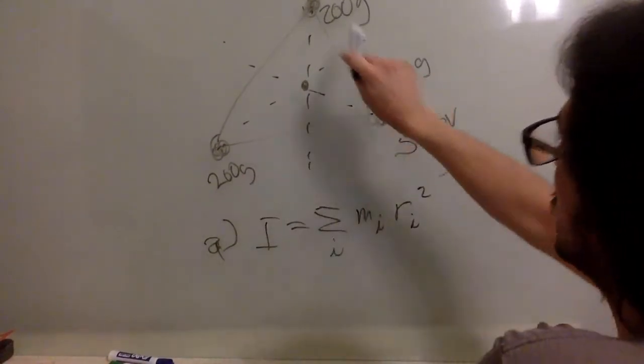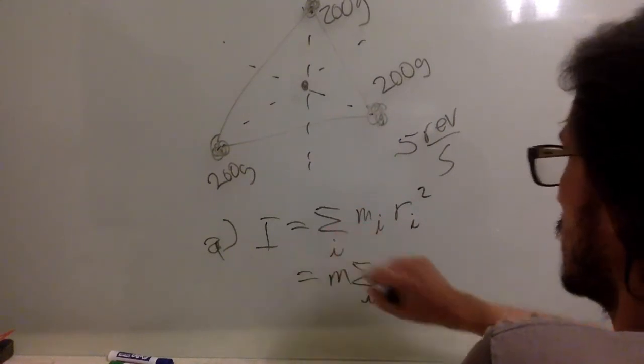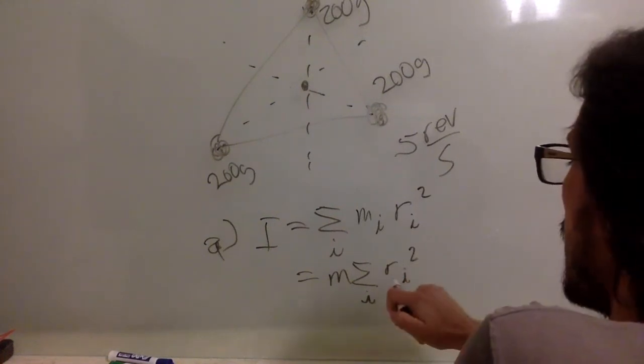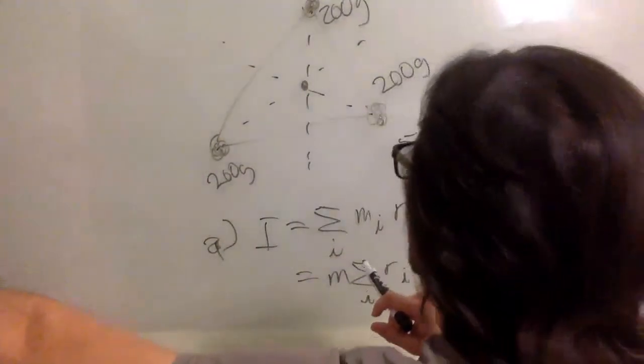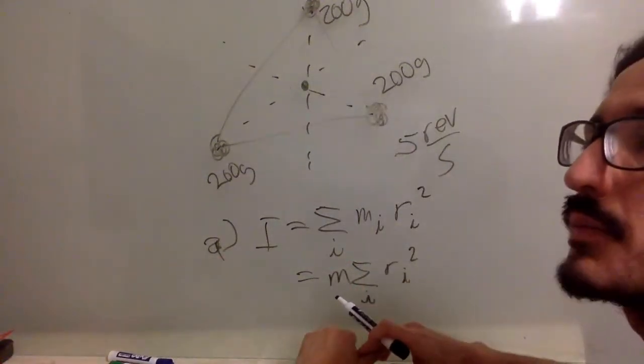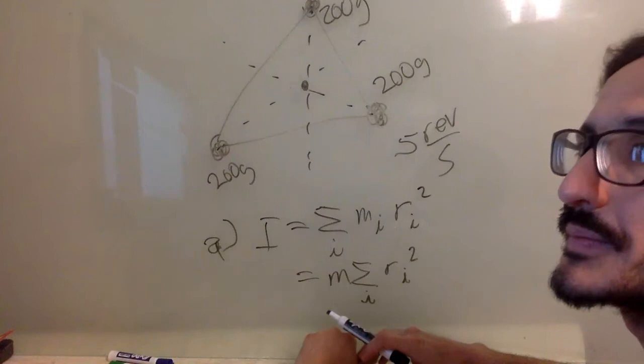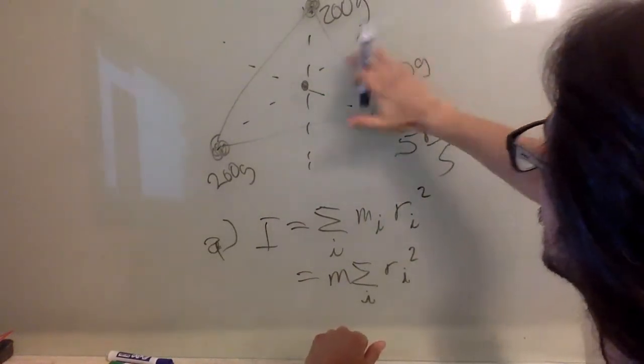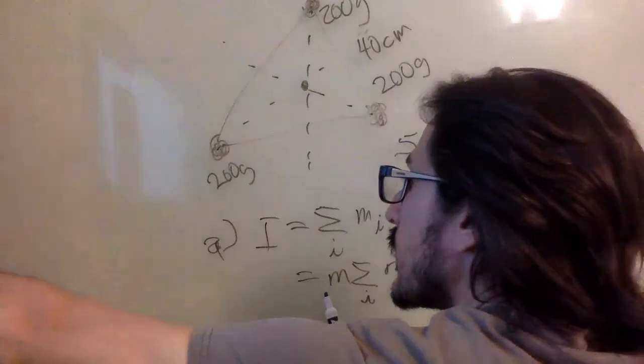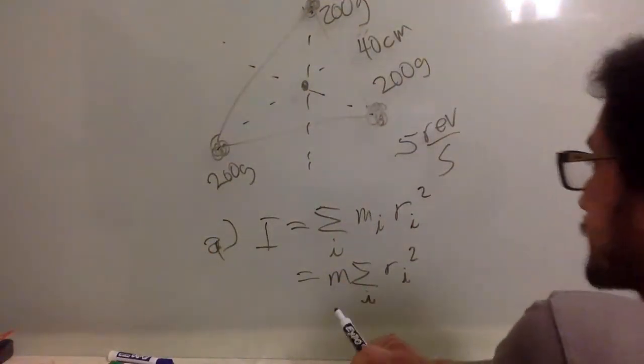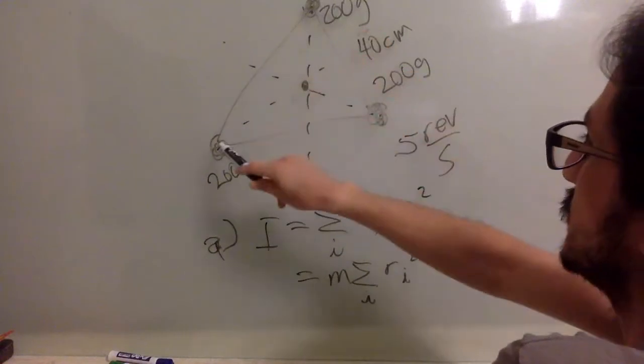In this case, all the masses are the same, that means we can take it out of the sum. And the distance, the radius - I guess the distance, not the radius. What is the distance of each of these masses to the center of rotation?